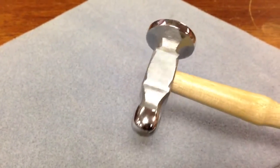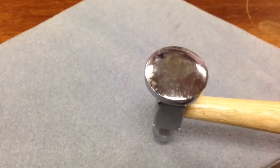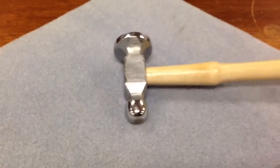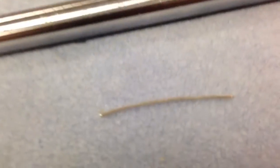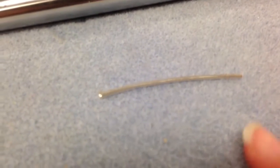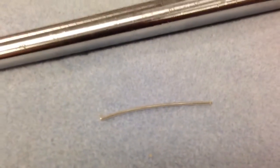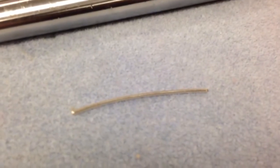The next necessary tool is a chasing hammer. We have the ball peen side here and the chasing hammer side here. You're also going to need a mat or a soft surface to work on like this. I'm just using a bead mat. If you have a bench pillow, that will work perfectly fine.